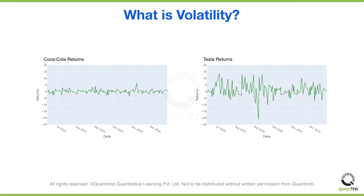Here is an example of the daily returns plotted for two stocks, Coca-Cola and Tesla, from June to December 2020. Will you be able to tell which stock is highly volatile and which one is low?